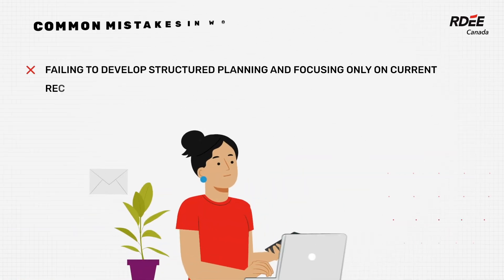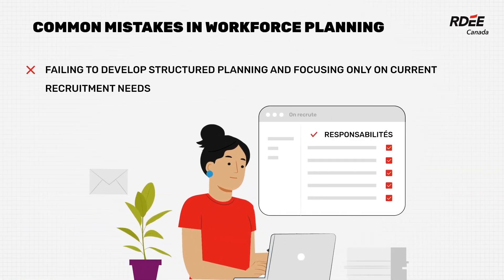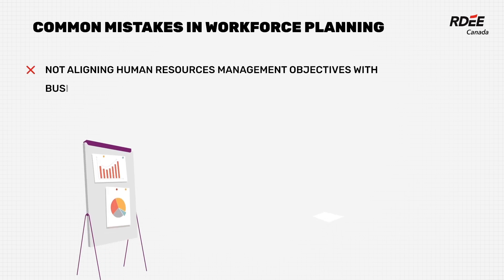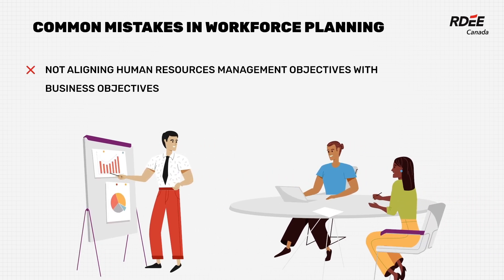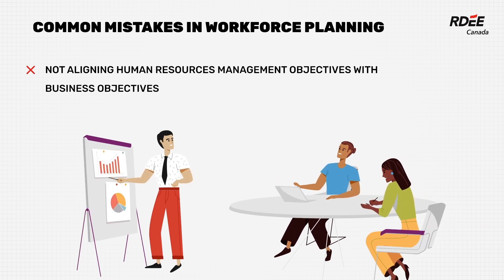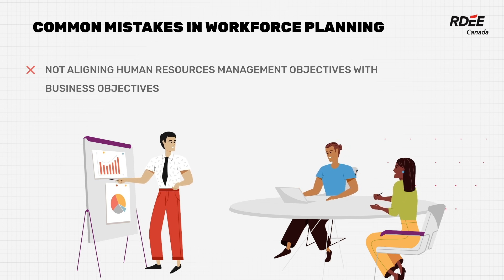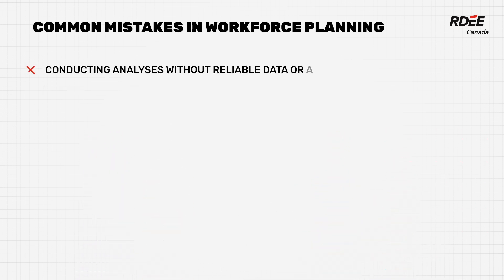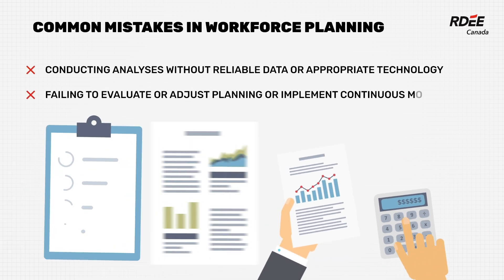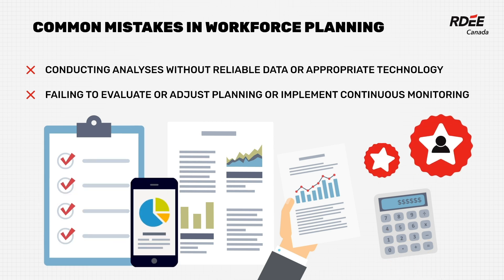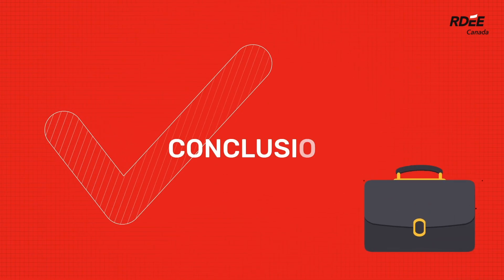Common mistakes in workforce planning: failing to develop structured planning and focusing only on current recruitment needs; not aligning human resources management objectives with business objectives; lack of collaboration in human resources planning; conducting analyses without reliable data or appropriate technology; and failing to evaluate or adjust planning, or implement continuous monitoring.